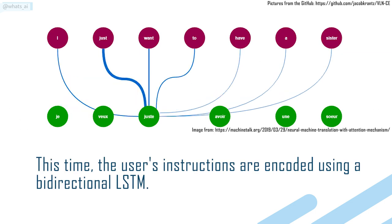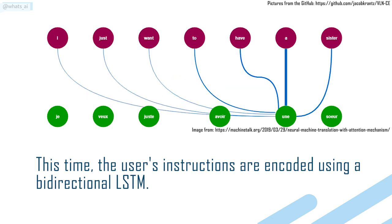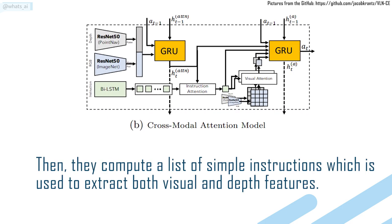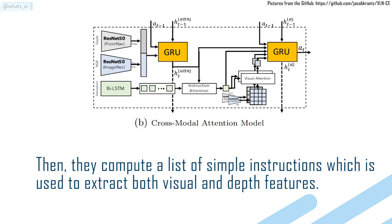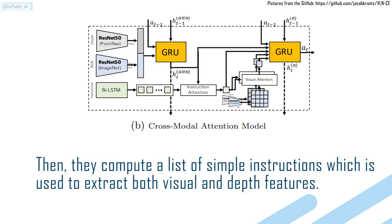This time, the user's instructions are encoded using a bi-directional LSTM. Then, they compute a list of simple instructions, which is used to extract both visual and depth features.